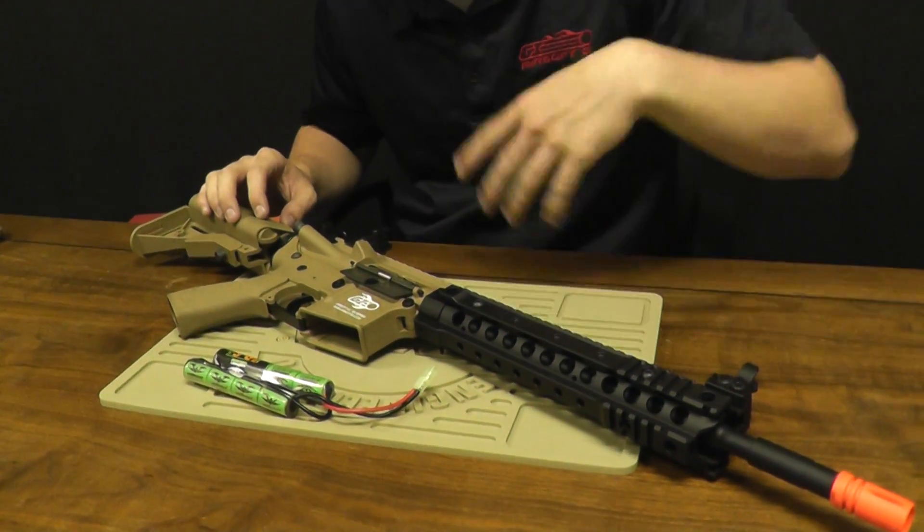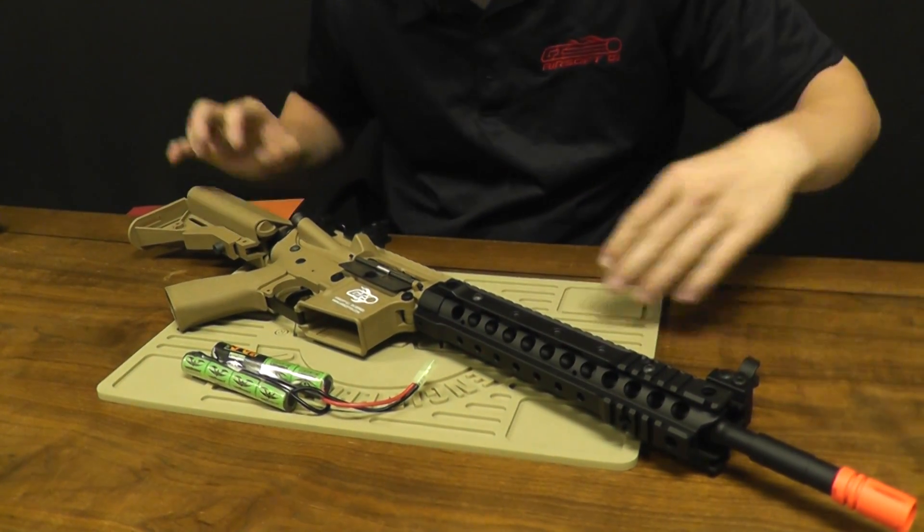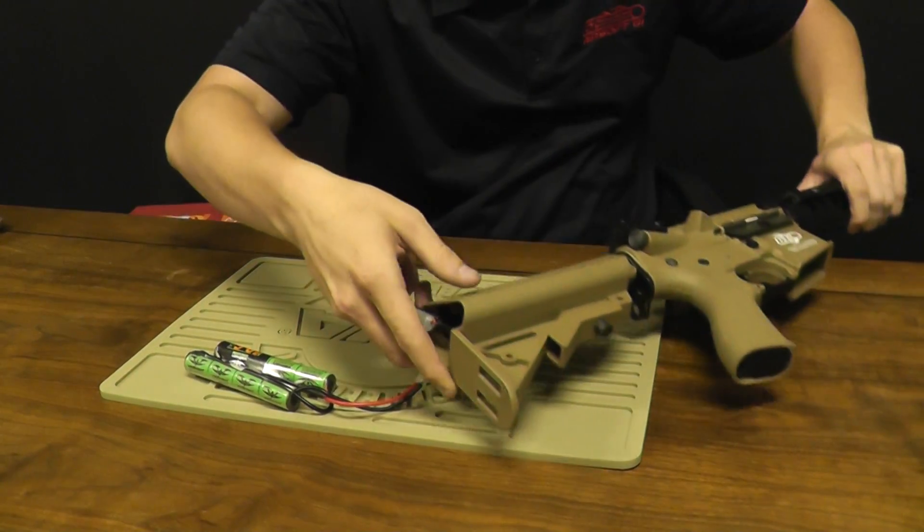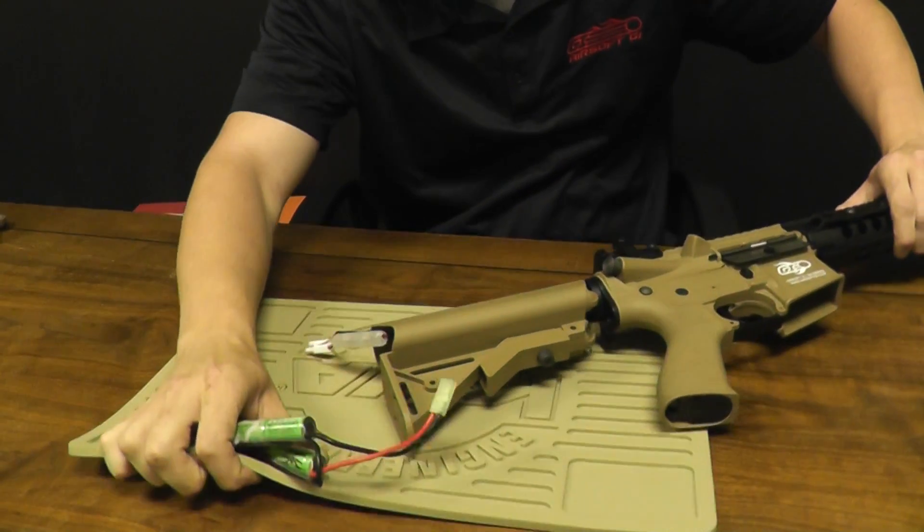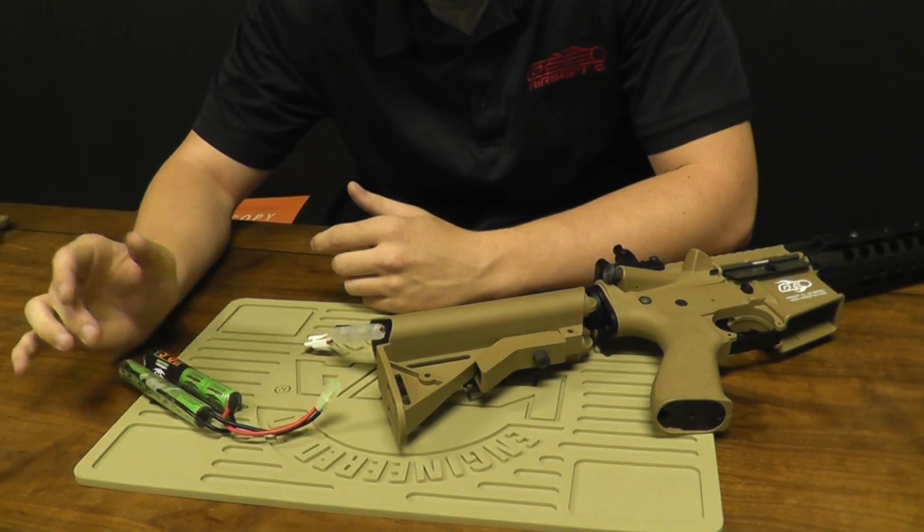Alright, and this is a G4 model. This is one of our nicer models, of course, G&Gs. We're going to go through the rear because this gun is a rear-wired weapon. And we'll start with the battery.